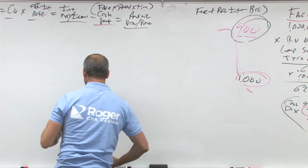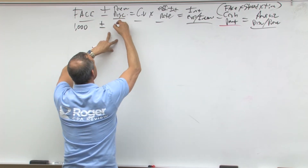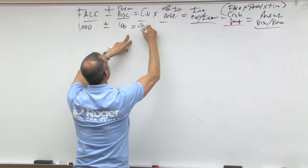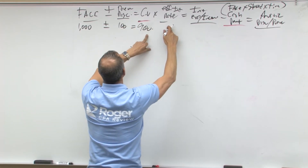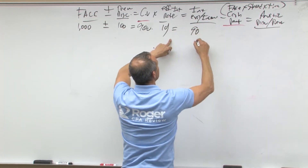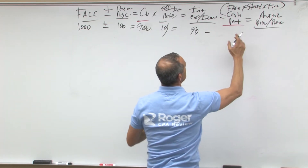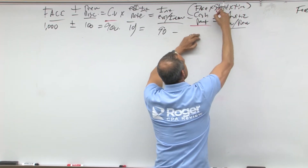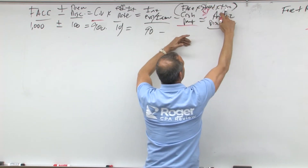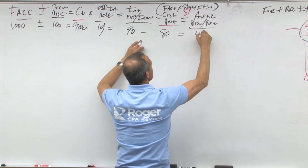Let's work through this again. We start with face — a million dollars — minus the discount of 100 equals 900, our carrying value. Times the effective rate: in this discount scenario I wanted to earn 10%, so 900 × 10% equals 90 — that's your interest expense. Minus the cash payment: a million times 8% times 12/12 for annual, or times 6/12 semi-annually. So a million at 8% is $80,000. That equals amortization of 10.